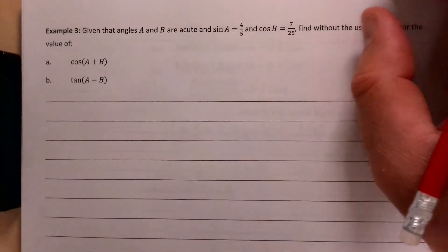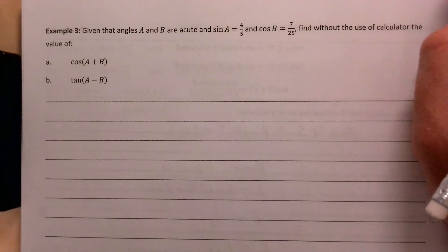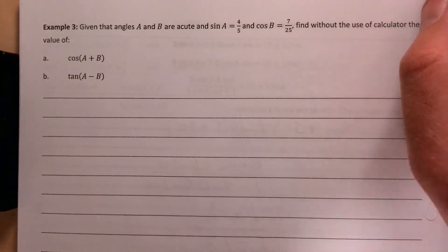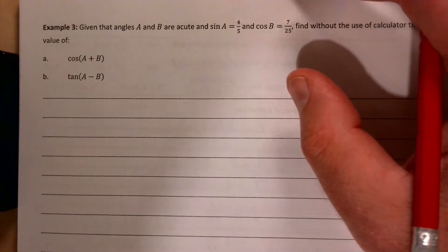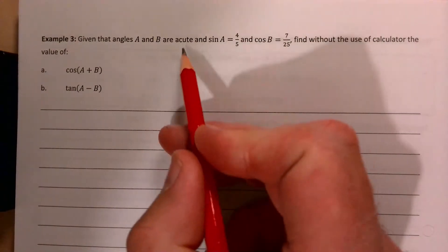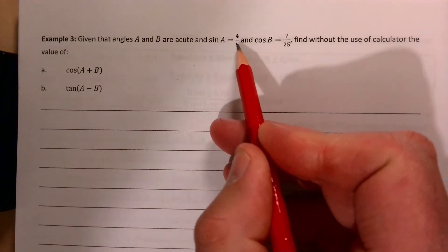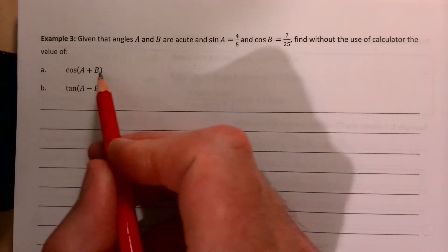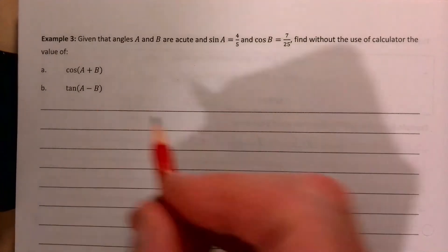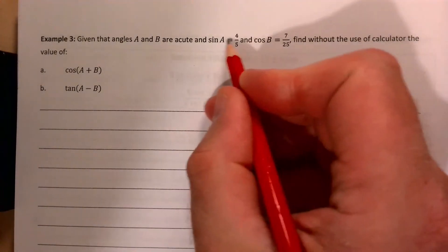We're looking at A2 Pure Maths and we're in the middle of our trig unit, Chapter 2. We're doing compound angle formulas in Examples 3, 4, and 5. The problem states: Given that angles A and B are acute and sin A = 4/5 and cos B = 7/25, find without the use of a calculator the value of cos(A+B) and tan(A-B).